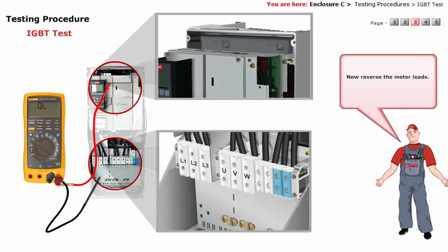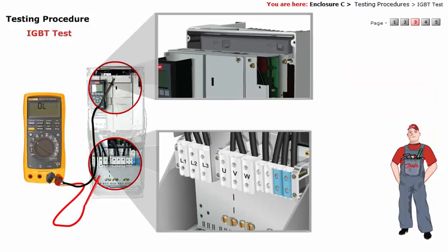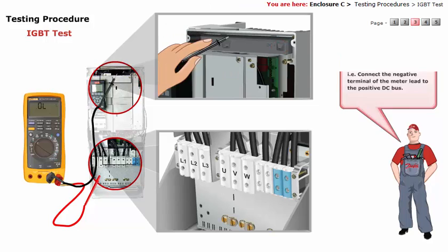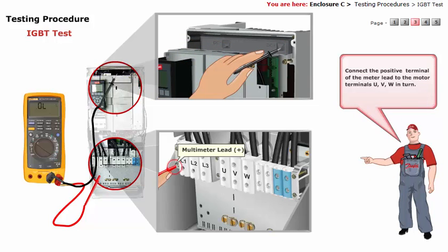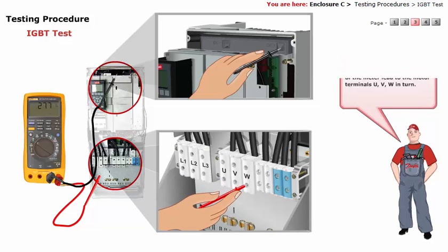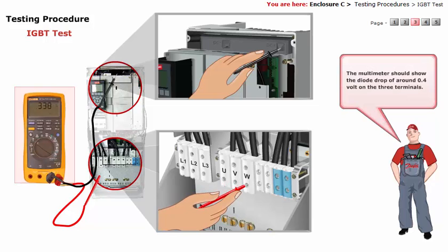Now, reverse the meter leads. That is, connect the negative terminal of the meter lead to the positive DC bus. Connect the positive terminal of the meter lead to the motor terminals U, V, W in turn. The multimeter should show a diode drop of around 0.4 volt on the three terminals.